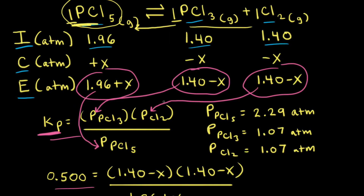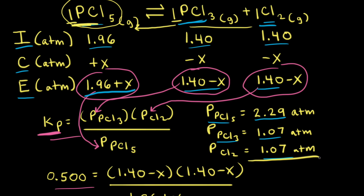Now that X = 0.33, we can solve for the equilibrium partial pressures. For PCl₅: 1.96 + 0.33 = 2.29 atm. For PCl₃: 1.40 − 0.33 = 1.07 atm. And the equilibrium partial pressure of Cl₂ is also 1.07 atm. Adding all three gives the total pressure P3: 2.29 + 1.07 + 1.07 = 4.43 atmospheres.